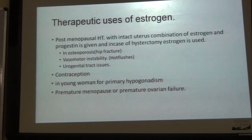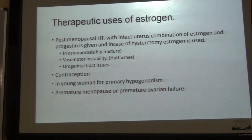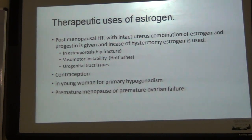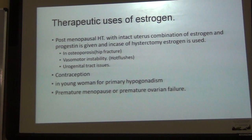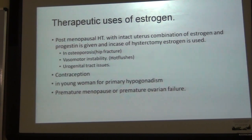The amount of estrogen used in replacement therapy is always less than the dose used in oral contraception, so the adverse effects will be less. Transdermal patches are also very effective in treating post-menopausal symptoms. If women only present with urogenital symptoms such as vaginal atrophy, it should be treated with vaginal drugs. Symptoms of post-menopause include osteoporosis, vasomotor instability resulting in hot flushes, and urogenital tract issues. Osteoporosis usually results in hip or vertebral fractures. Estrogen decreases bone resorption but has no effect on bone formation.